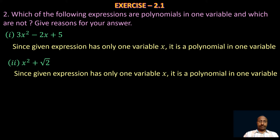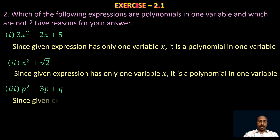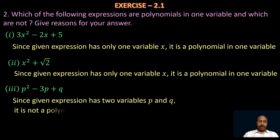Take the third one: p² − 3p + q. In this polynomial we have two variables, p and q. Since the given expression has two variables p and q, it is not a polynomial in one variable because there are two variables in the given polynomial.